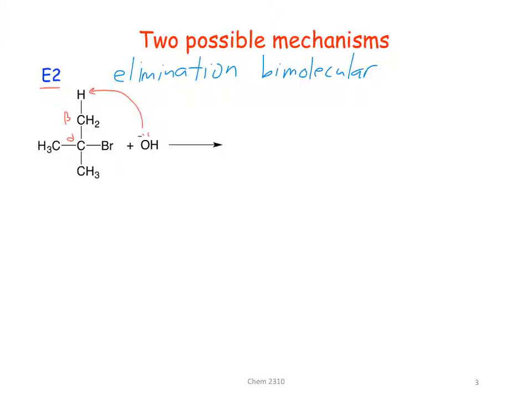We have three beta positions on this molecule, so it doesn't matter in this case which one we do. So it's going to pull off that proton, these electrons are going to come down and form the pi bond, and the leaving group is going to come off.